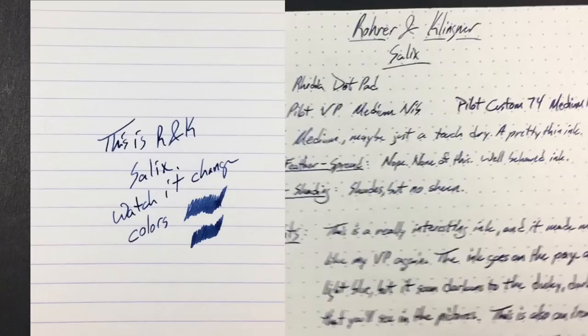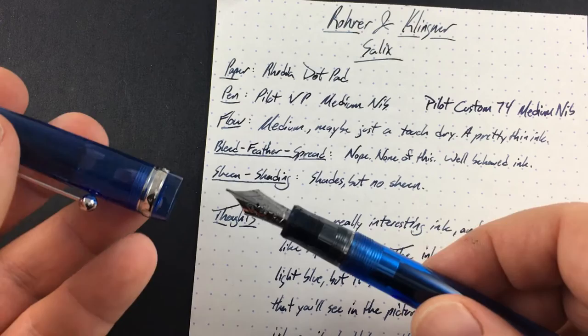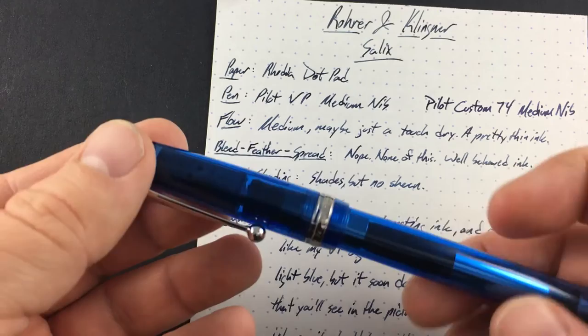I have this currently in this pen right here, which is a Custom 74. It's a medium nib. I think the medium nib on here is a pretty wide medium, as opposed to a lot of Japanese nibs will run a size small or something. I think this is a pretty large medium, actually. And it's a fairly wet pen,